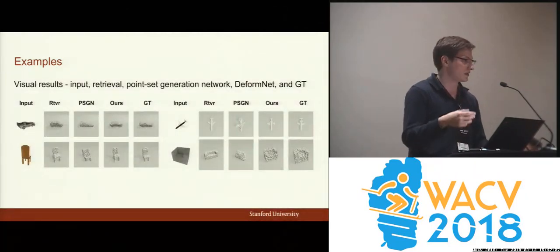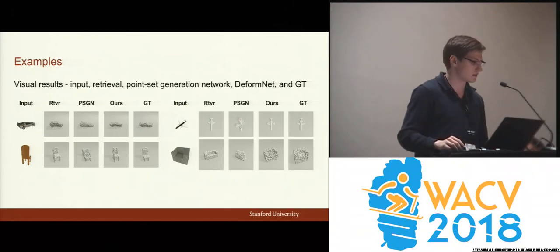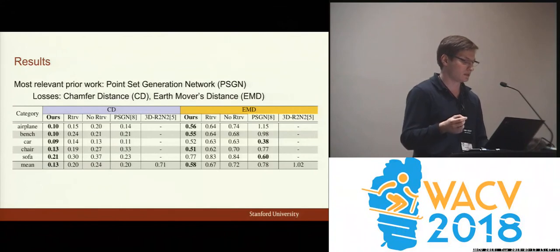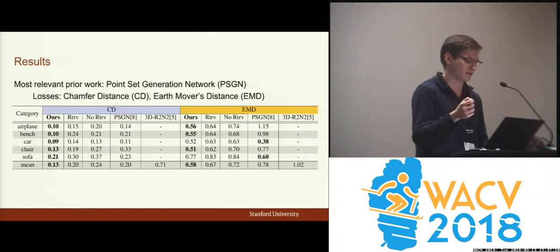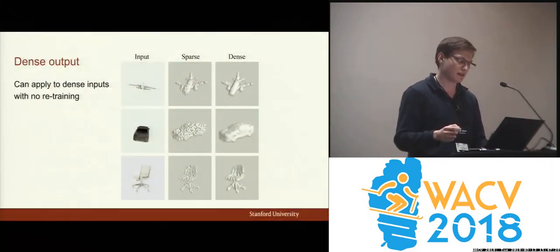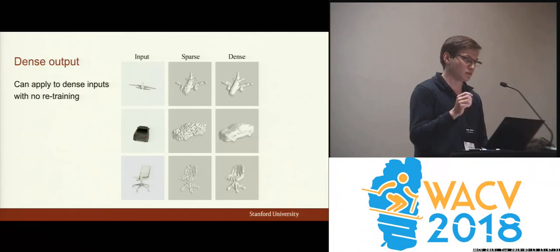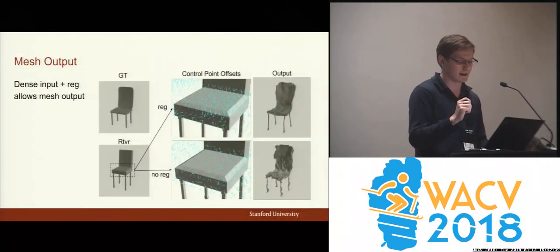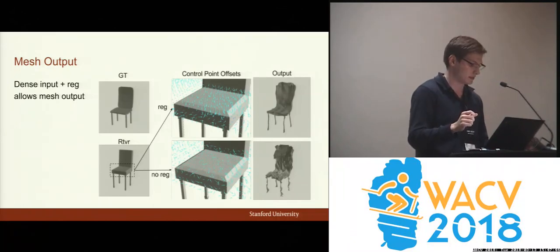Here are more examples — we can do this with cars, with planes, with sofas, and so on. We have also shown that DeformNet gets quantitatively better metrics than the most relevant other work, the Point Set Generation Network, based on Chamfer distance and Earth Mover's distance. Finally, there's a neat aspect where you can train with sparse point clouds but then apply those deformations to dense point clouds, which allows you to produce mesh outputs that are relatively good — a problem that has not been addressed very much.